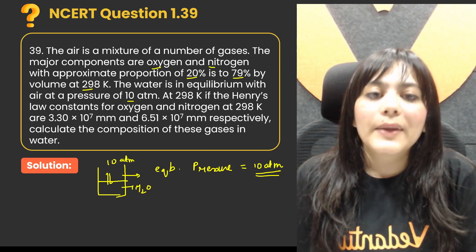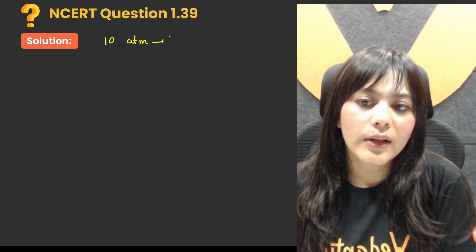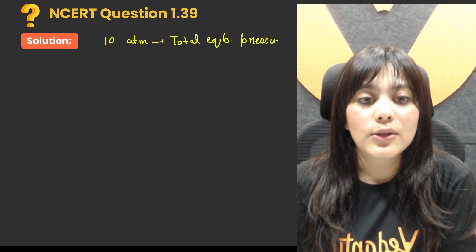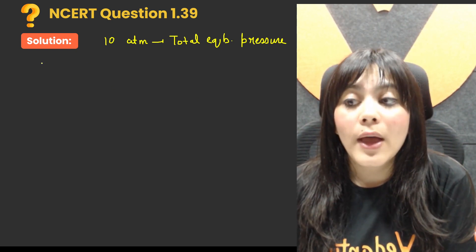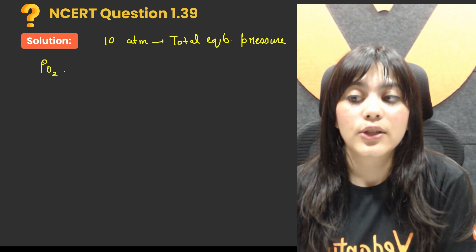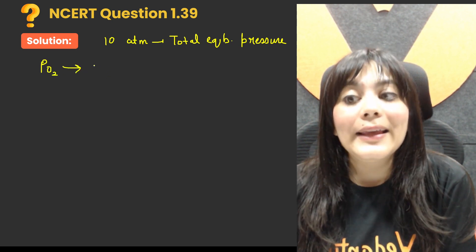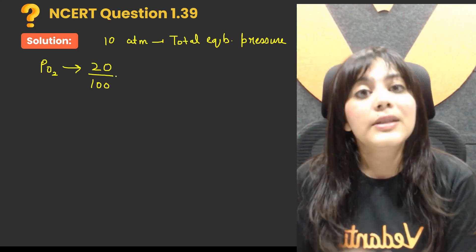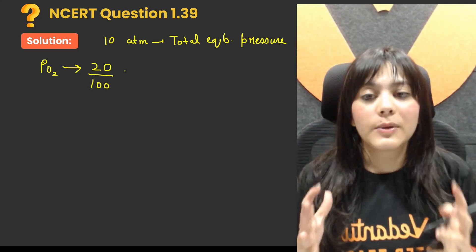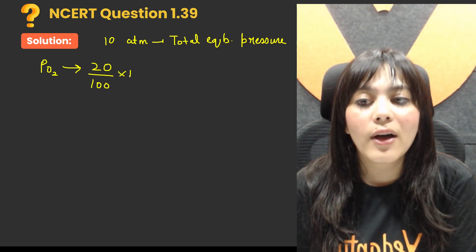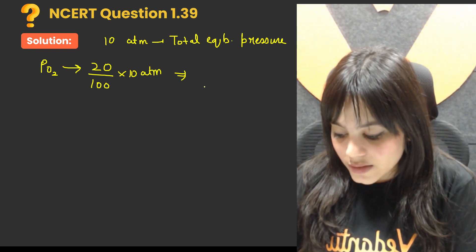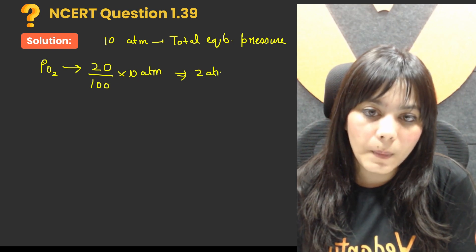At this equilibrium pressure of 10 atmospheres, both gases are present. Oxygen is 20% of the atmosphere, so 20% of 10 atmospheres will also be oxygen. If the whole atmosphere has 20% oxygen, then 20% of 10 ATM gives us the partial pressure of oxygen, which is 2 atmospheres.